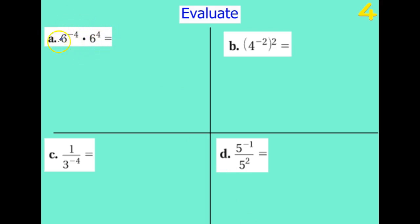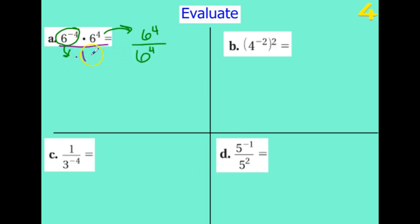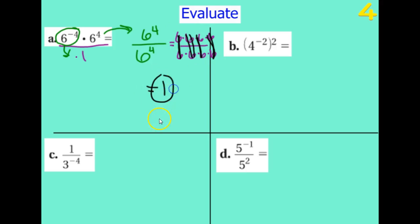Now we have one exponent that's negative and one that's positive. I'm going to make it one big fraction and move the negative exponent to the bottom. So six to the power of negative four goes to the bottom as six to the fourth, and six to the fourth stays on the top. If you write it out, you have six times six times six times six on both top and bottom — they all cancel out, giving us one. Or simply: six to the fourth over six to the fourth is just one.